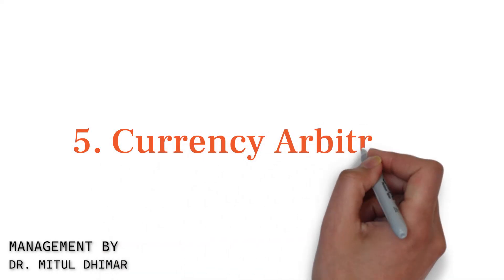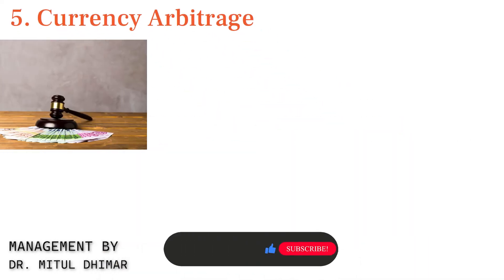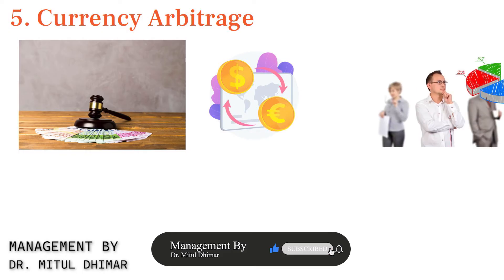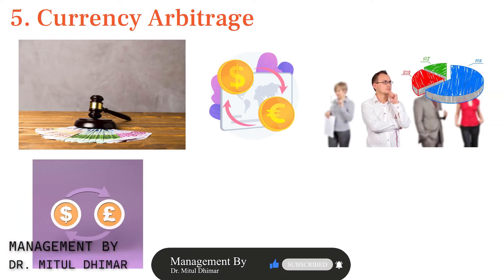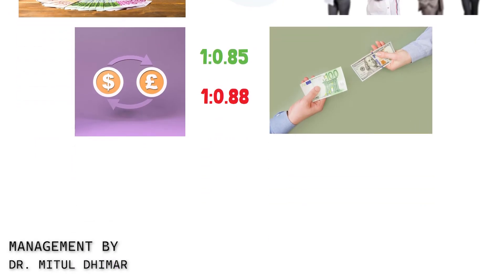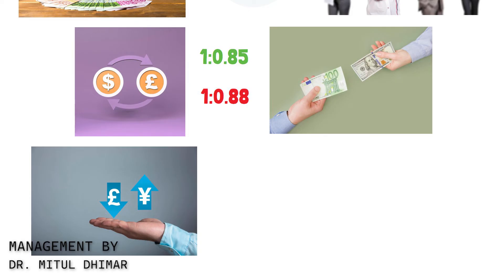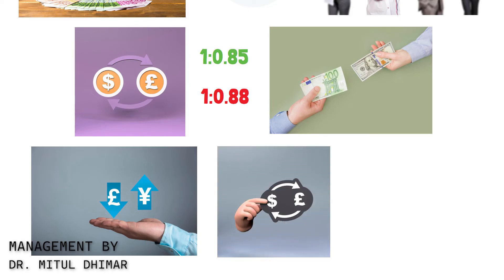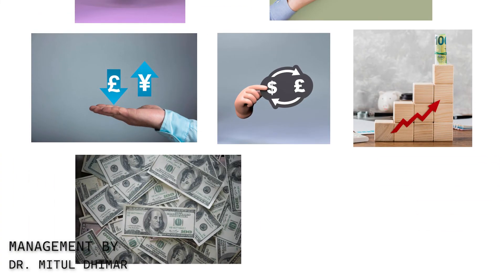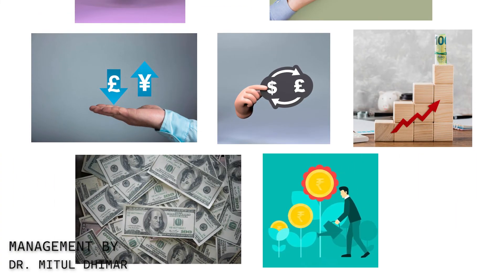Fifth, Currency Arbitrage. Currency arbitrage involves exploiting differences in exchange rates in different markets. Imagine the exchange rate for US dollar to euro is 1 to 0.85 in one market and 1 to 0.88 in another. You could convert your dollars to euros in the market with the lower exchange rate, then convert them back in the market with the higher rate, ending up with more dollars than you started with due to the exchange rate difference.